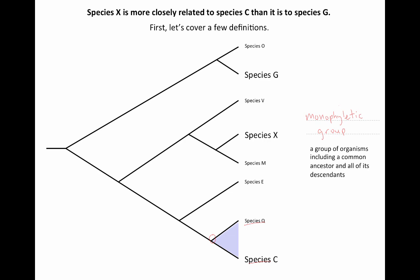We can do the same thing with other descendants on the tree and find other monophyletic groups. For example, the one I just highlighted here includes this ancestor and then the descendants of species E, Q, and C. We can keep building back — so this is another monophyletic group. This one would include more of the species along the right side: species M, species X, species V, and they would all be descendants from this ancestor right here.